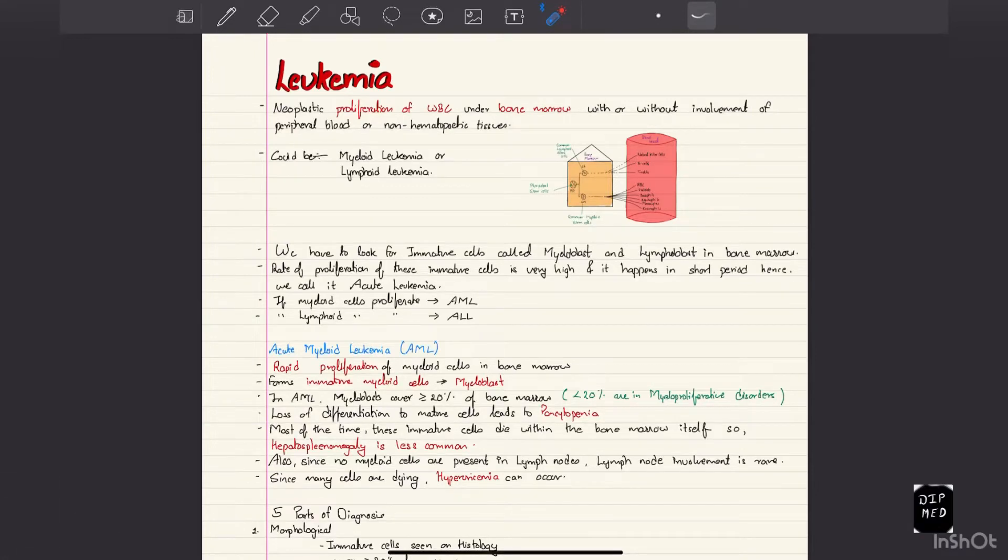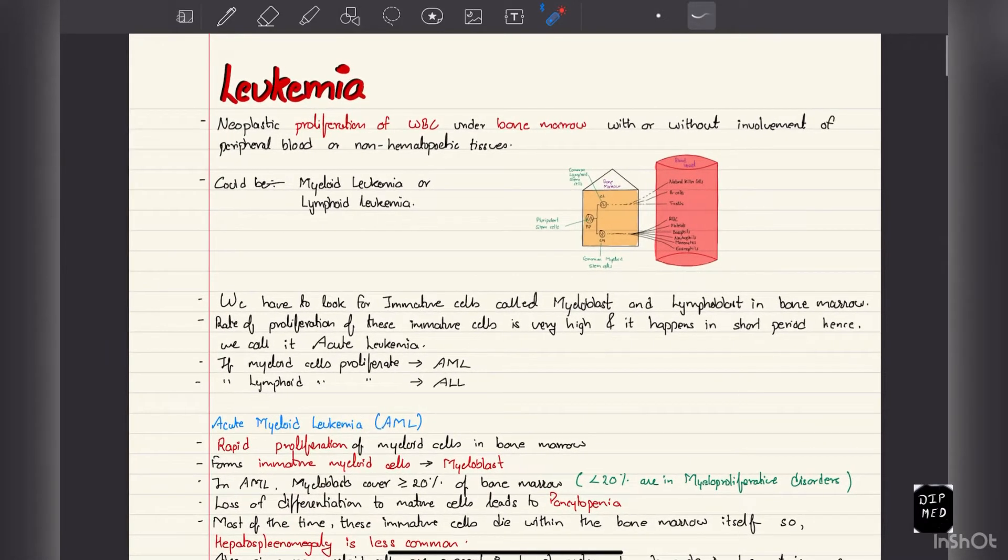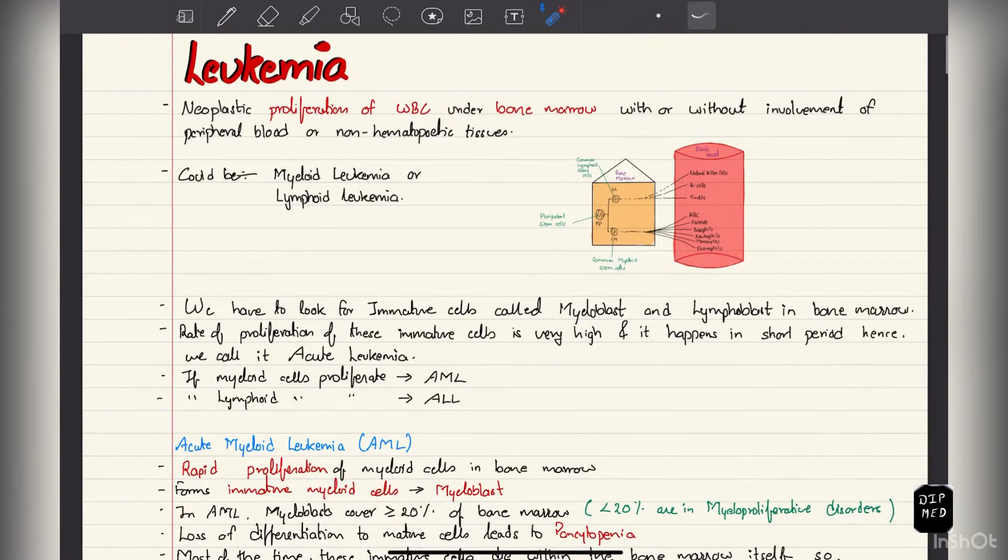Hello everyone, this video is about acute leukemia. First, leukemia means neoplastic proliferation of white blood cells in bone marrow with or without involvement of peripheral blood or non-hematopoietic tissues. It could be myeloid leukemia or lymphoid leukemia.